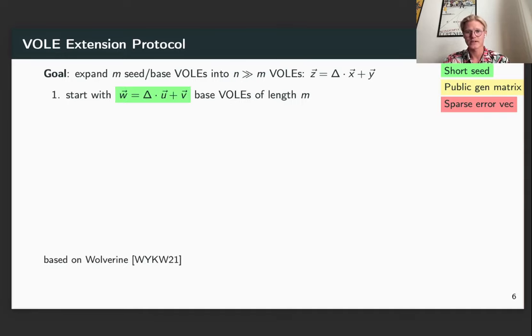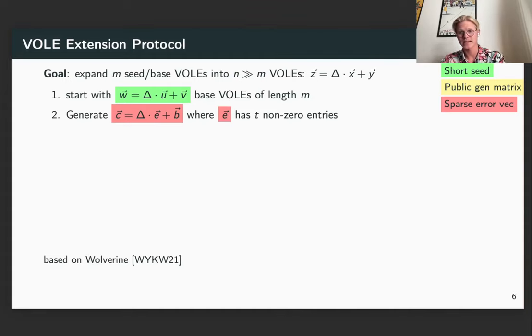So we start out with base vector OLEs of length M, then we generate this error which is sparse, it has exactly T errors, where T is significantly less than N.